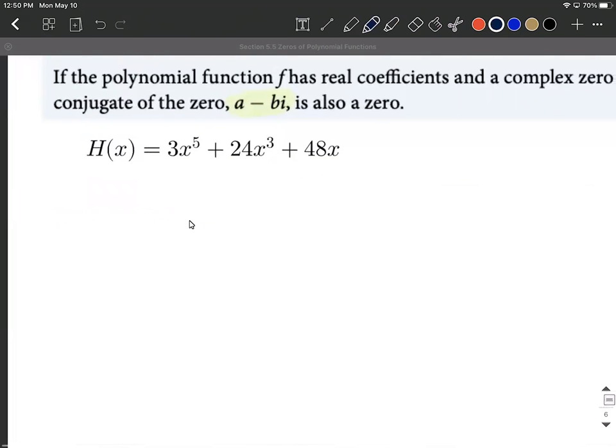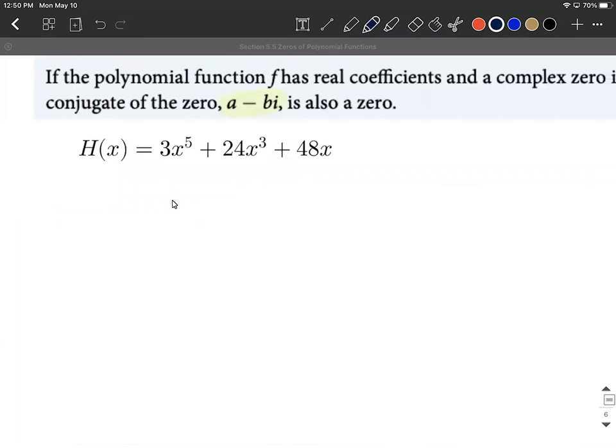As we get going, I'd probably start and think, can I just factor from the beginning? Well, we have three terms. They all seem to have multiples of three in them and they all have x's. So let's pick out 3x as our common factor. If we remove that common factor, that's going to leave us with x⁴ + 8x² + 16 remaining inside a set of parentheses, and that's still equal to H(x).